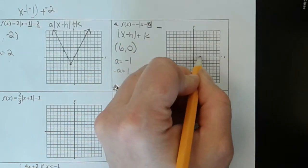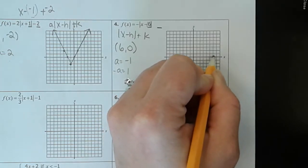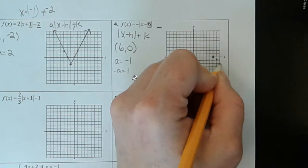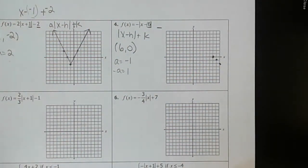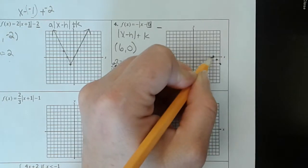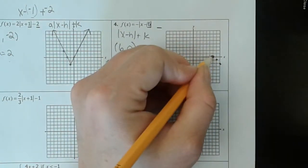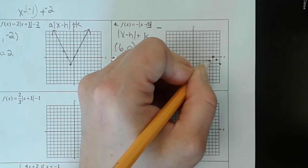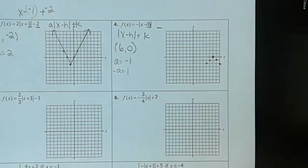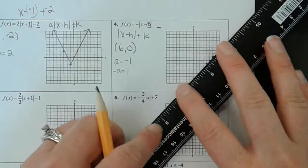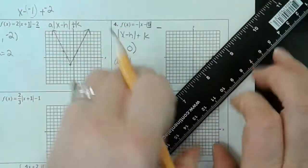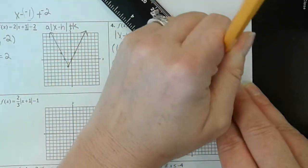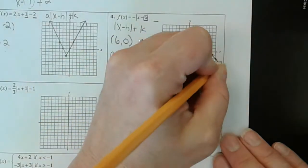So let's graph our vertex: 1, 2, 3, 4, 5, 6. And we're going to go a negative 1 slope — down 1, over 1. Because remember, a is the slope on the right side and the opposite of that is the slope on the left side. The slope on the left side would be up 1 over 1, but we don't want above the vertex. So we go left and down, left and down. We know that if you have a negative number in front of our absolute value, the function is going to be flipped.